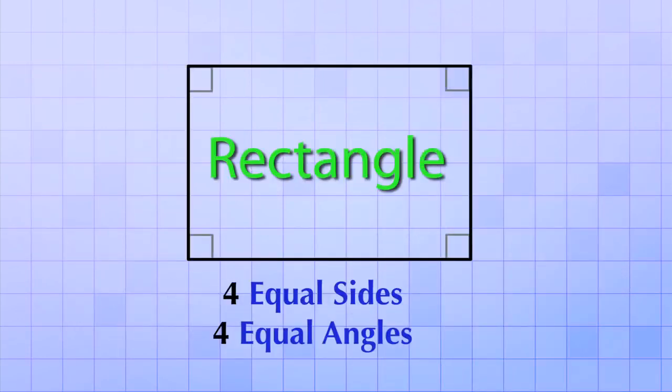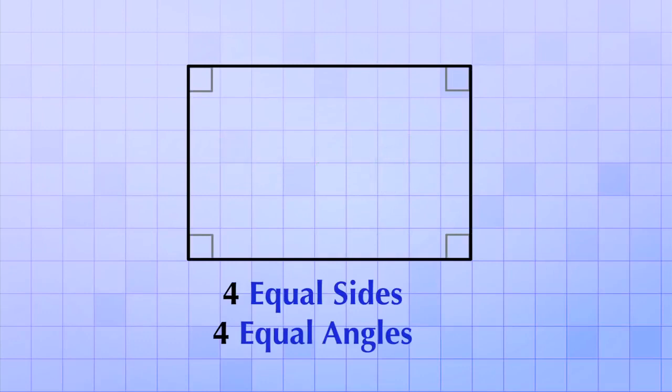A rectangle is a quadrilateral that still has four equal angles. Notice that when we stretch the square, the angles didn't change at all. But it does not have four equal sides. Again, notice that just like a square, a rectangle is made from two pairs of parallel sides.